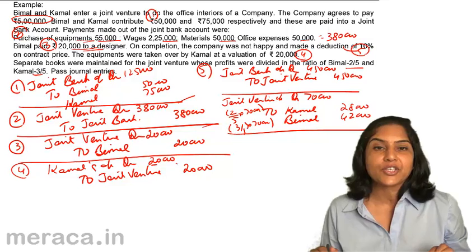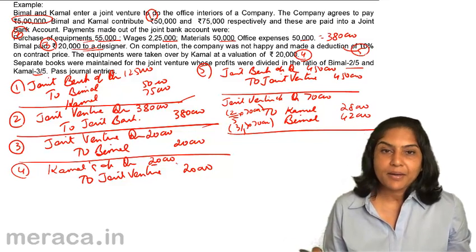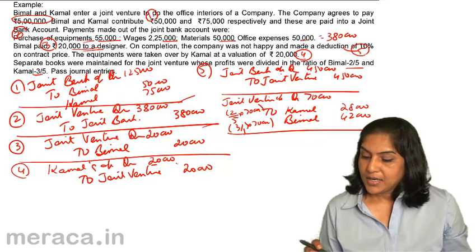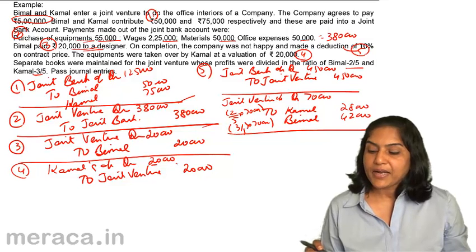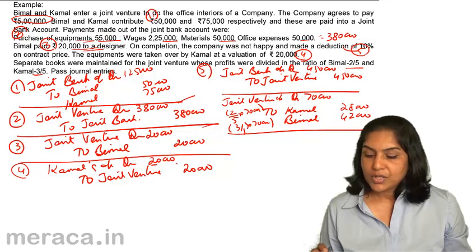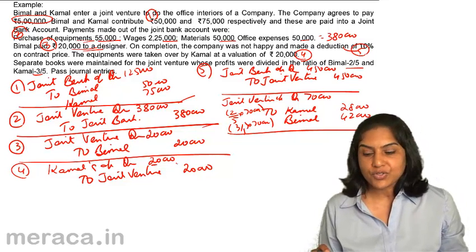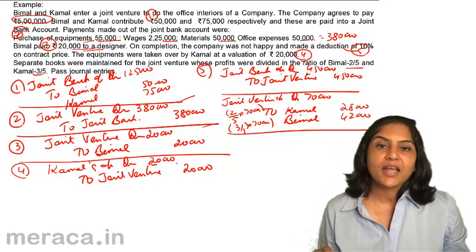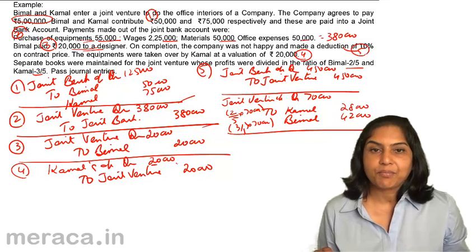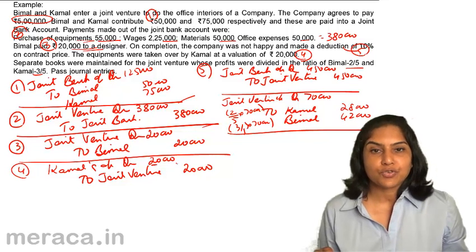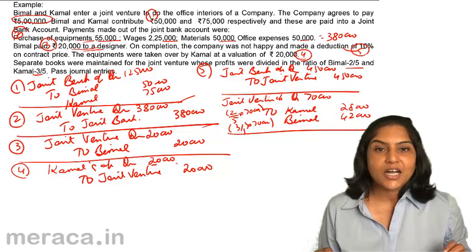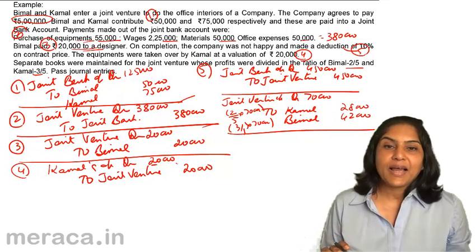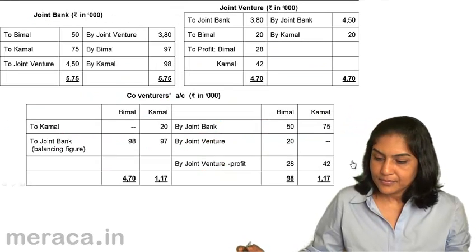When the equipments were purchased, joint venture account was debited. Now when they are being taken over by Kamal, Kamal's account is debited and joint venture account credited. The balancing figure in the joint venture would be 70,000. We close that: joint venture account debit 70,000 — to Kamal 42,000 and to Bimal 28,000 — indicating profit on joint venture shared in the ratio 2:3. The final entry is Bimal's account debit and Kamal's account debit to joint bank, so that the balance in the joint bank can be distributed to Bimal and Kamal.